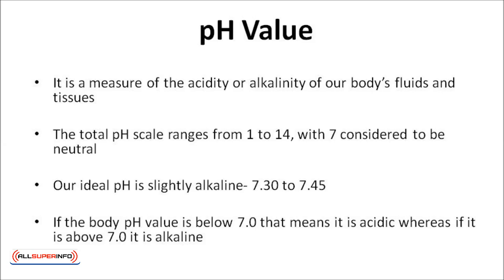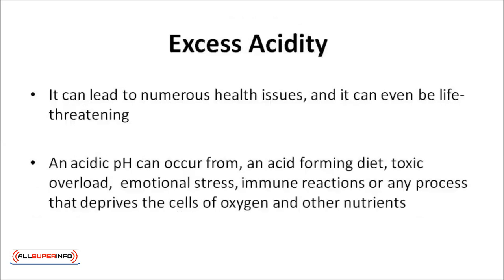If the body pH value is below 7, that means it's acidic, whereas if it's above 7, it's alkaline. The most common form of pH imbalance is excess acidity. It can lead to numerous health issues, and it can even be life-threatening.